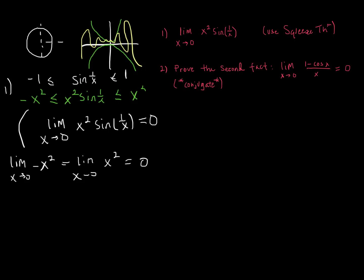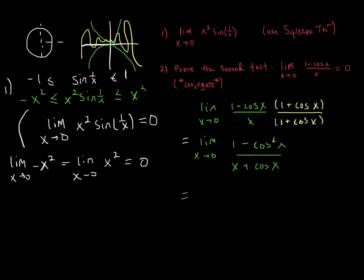For number 2, I recommend proving this by multiplying by the conjugate. Multiplying by the conjugate at first makes this look more complicated, but notice that originally the reason we couldn't just plug in 0 was that our denominator went to 0. When we multiply by the conjugate, substituting in 0 gives a numerator of 0 — since cosine of 0 is 1, and 1 squared is 1 — but the denominator is 0 plus 1. So the limit is just equal to 0.